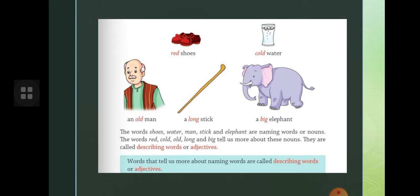These are the describing words or adjectives. Describing words means it is described, an adjective. Words that tell us more about the naming words - naming words are called nouns. You know that.